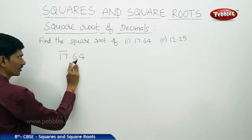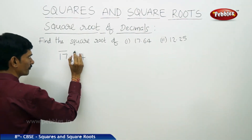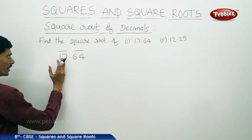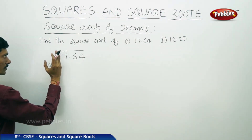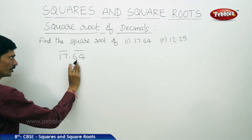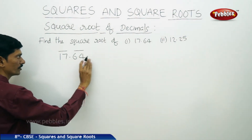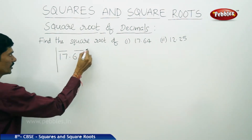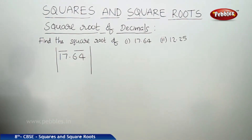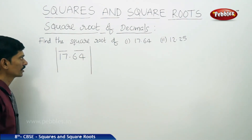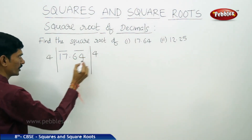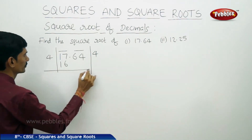From 6 (tenths place), we use the bar from left to right for every two digits. To repeat: in the decimal number, in the integral part, we use the bar over every two digits from right to left. In the decimal part, we use the bar over every two digits from left to right. Now consider 17 — is it a perfect square? No, it is not a perfect square. What is the largest perfect square smaller than 17? That is 16.